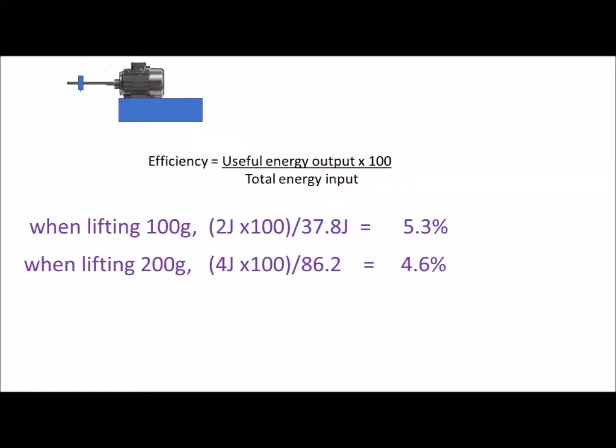So here are our results. As you can see, the efficiency of an electric motor is not great. Around about 5% when lifting 100 grams, which was the 1 newton. Lifting a heavier mass, so a greater weight, the efficiency goes down.